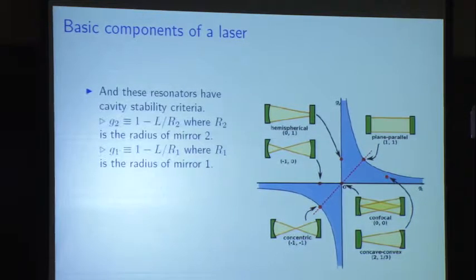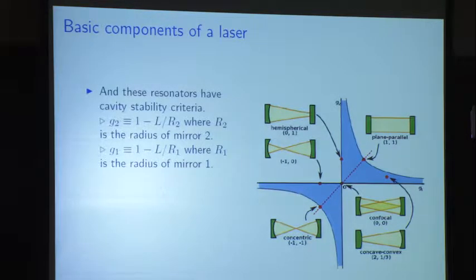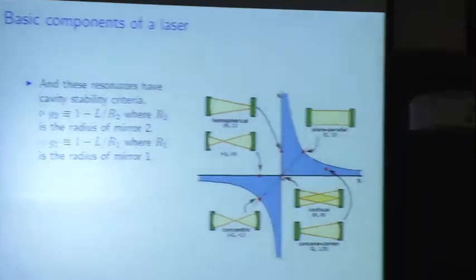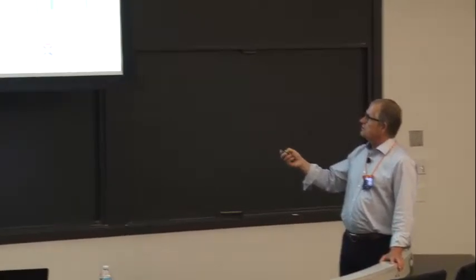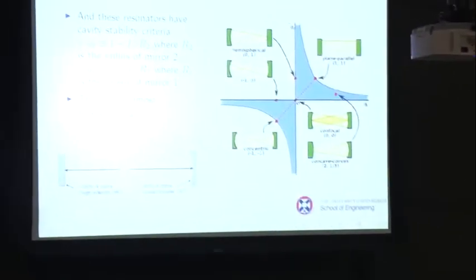When designing resonators, you never want to be near one of the edges of the stability diagram — we would always land right in the middle. Because if you're near the edge, any little thing would throw it out of stability and your laser would die, then come back. Nothing ever happened along the edges; things always happened inside. This one's almost hemispherical — you don't want purely hemispherical, it's too unstable. That stability criteria applies for the lowest order spatial mode, which is a Gaussian intensity profile.